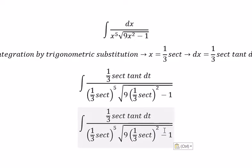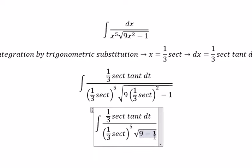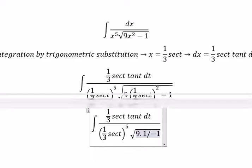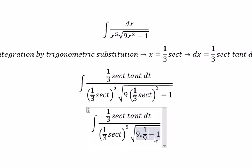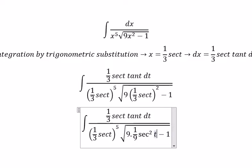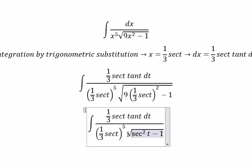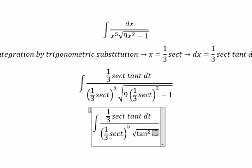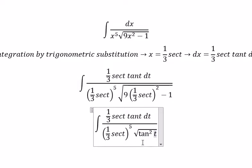So this one will go about 1 over 9 sec of t squared. And this one they will simplify: sec of t squared minus 1, we change for tan(t) squared. The square root of tan(t) squared gives about tan(t).